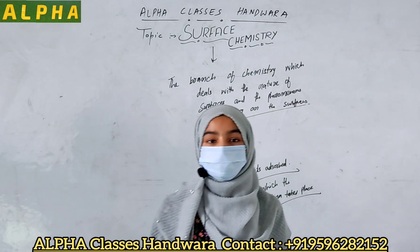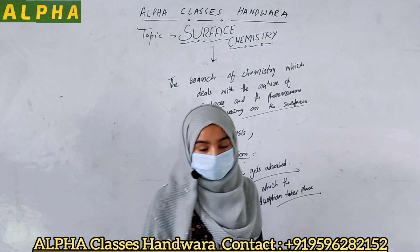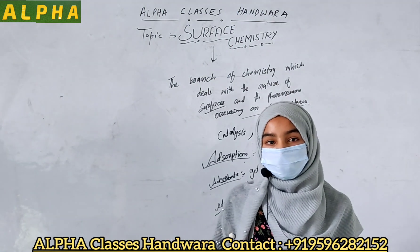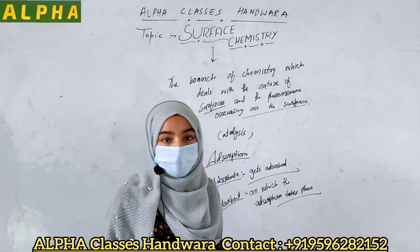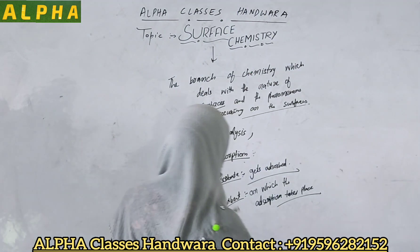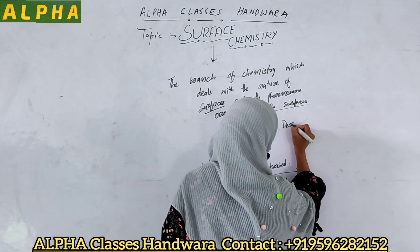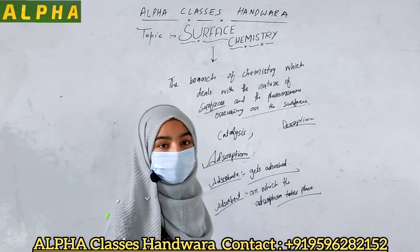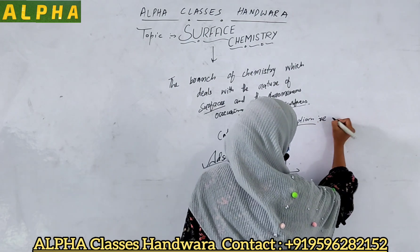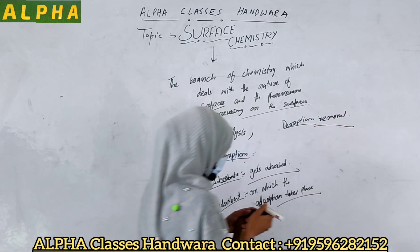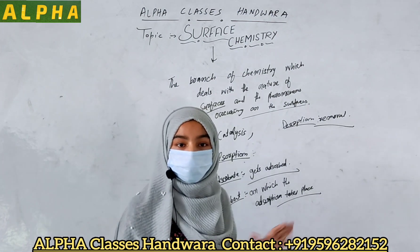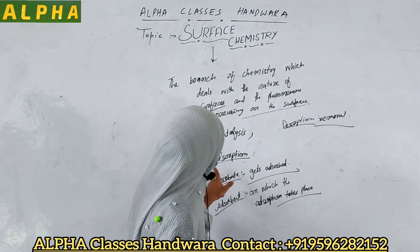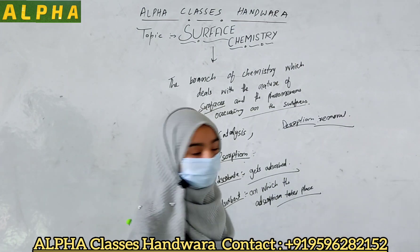Now, if we create certain conditions — either by increasing temperature or decreasing pressure — such that the adsorbate molecules are removed from the adsorbent, we say that desorption has taken place. Desorption is the removal of adsorbate molecules from the surface of the adsorbent.